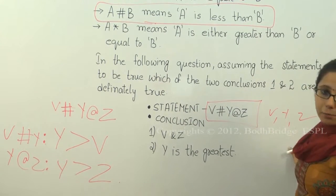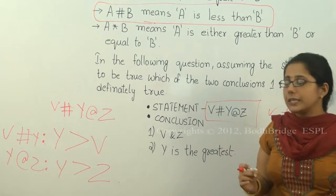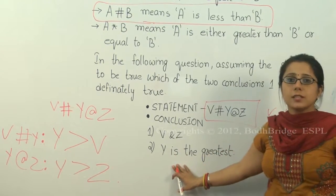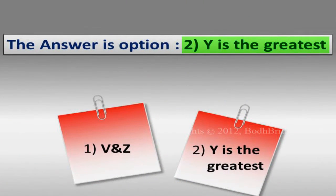So if Y is greater than both V and Z, that means Y is the greatest. So statement two is definitely true. So this is our answer.